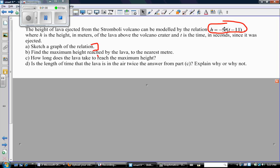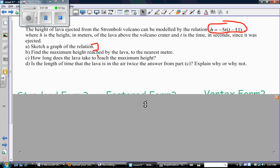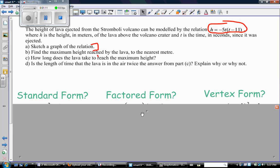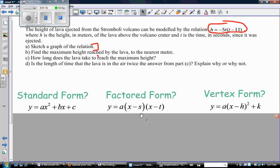Obviously, if you multiply this out, you're going to have t times t, which is t squared, and that makes this a quadratic relation. There are three different forms of quadratic relations: standard form y = ax² + bx + c, factored form y = a(x - s)(x - t), and vertex form y = a(x - h)² + k.